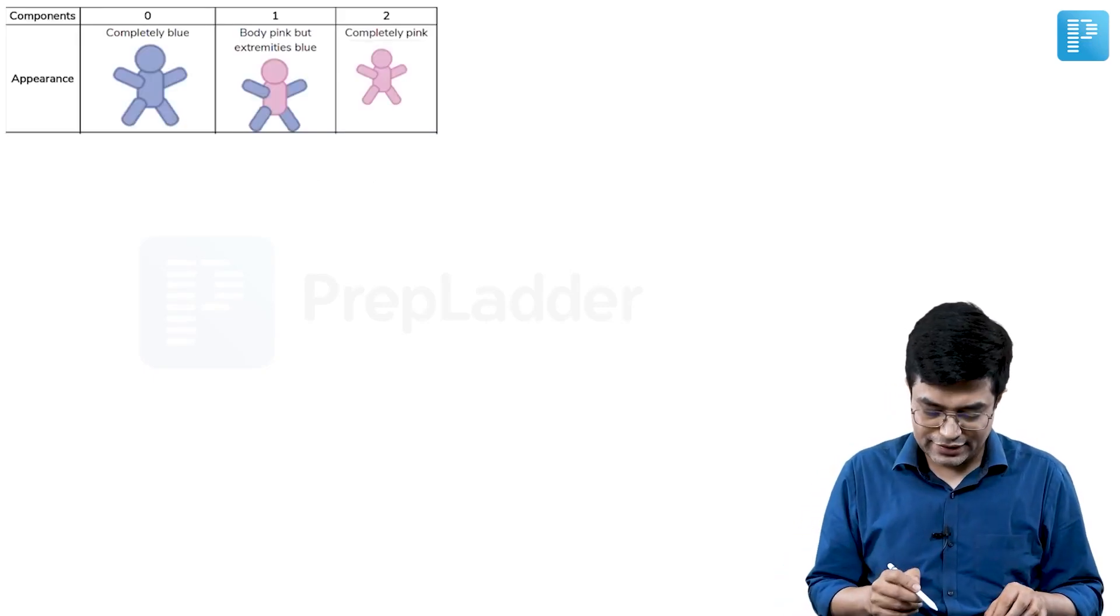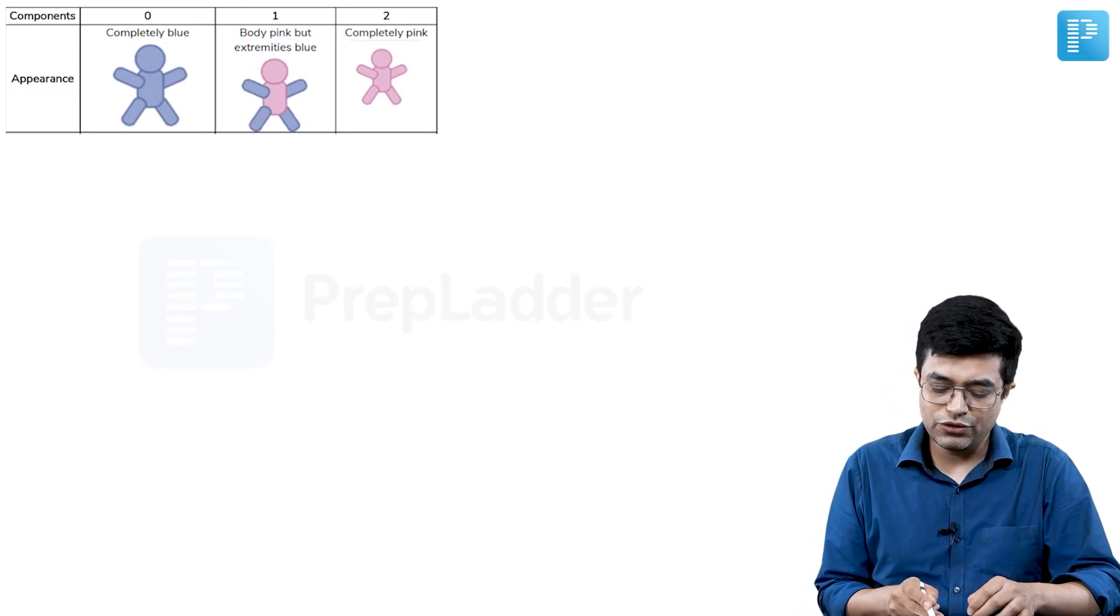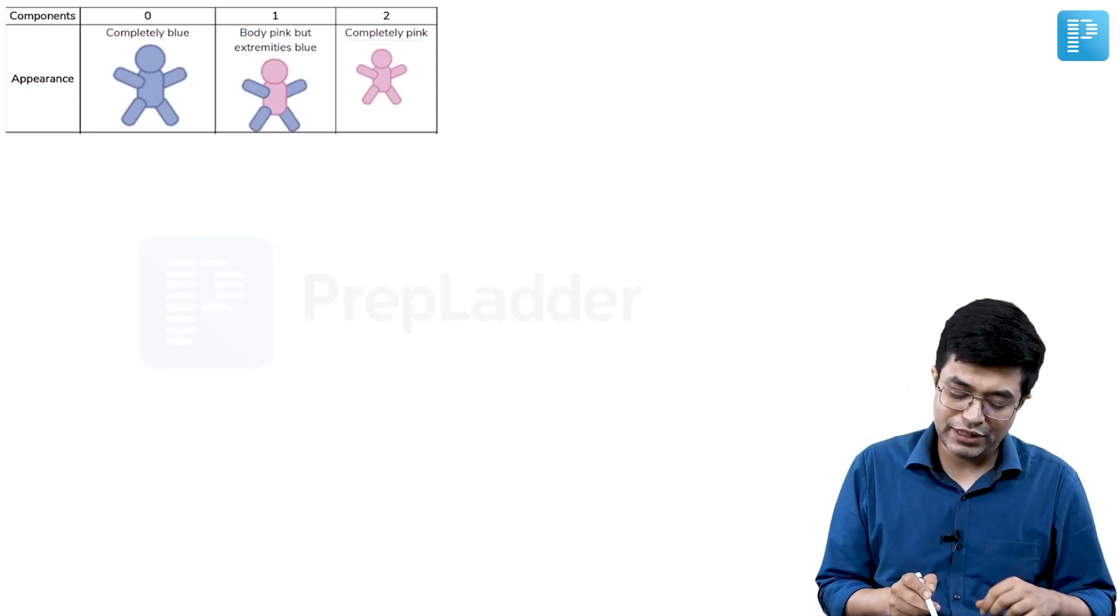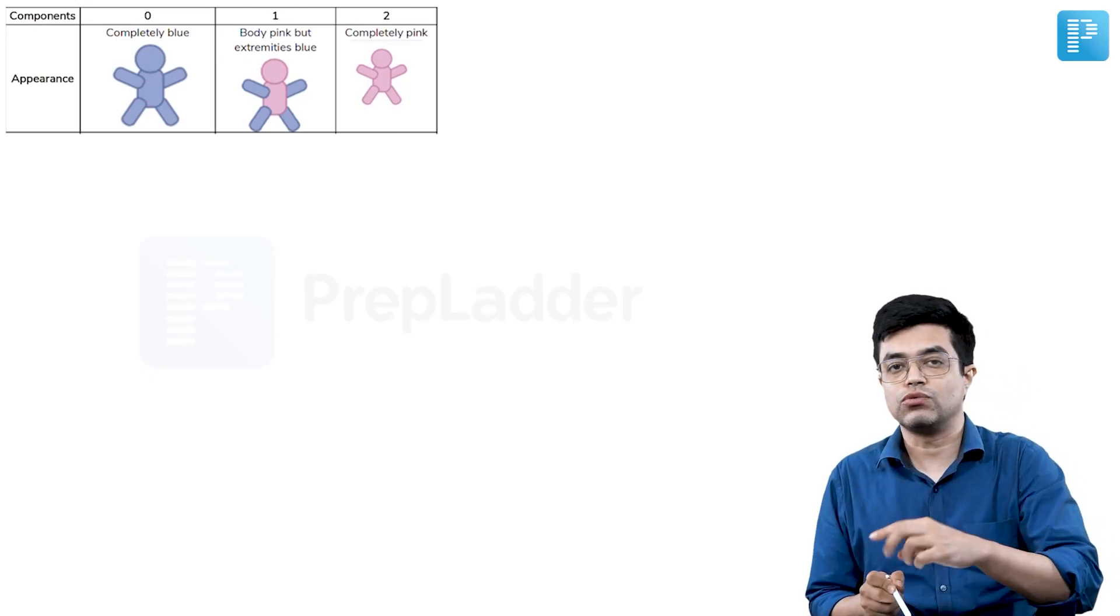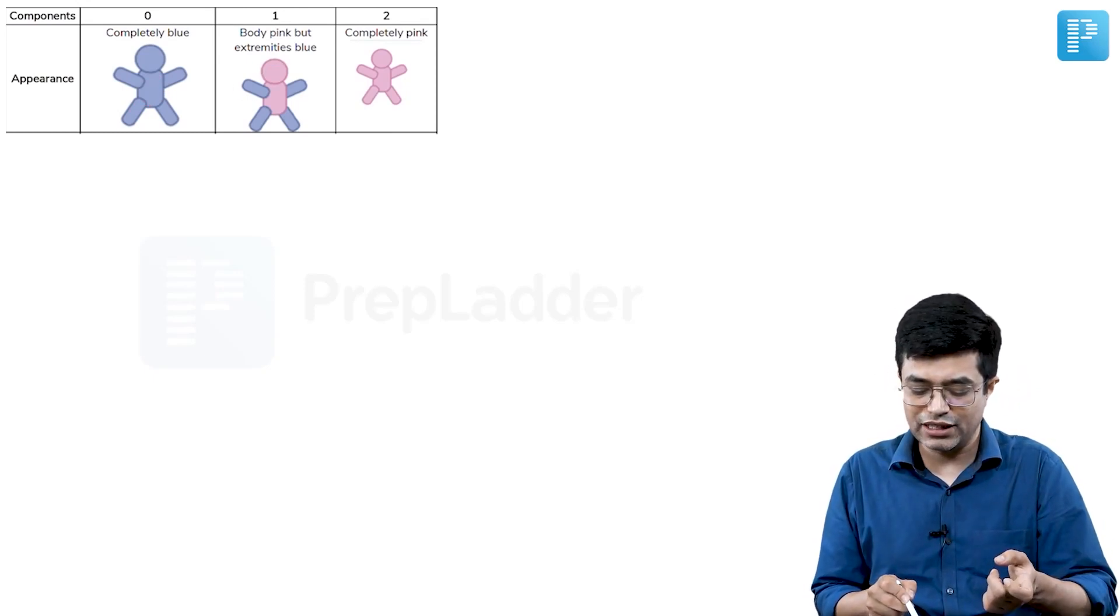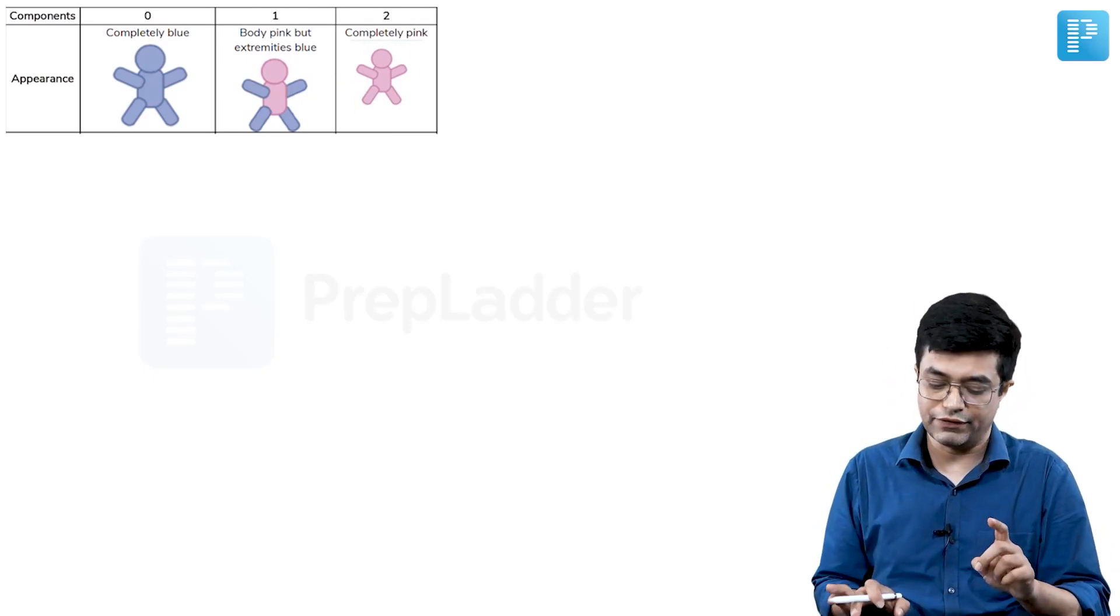So the first component is appearance. A stands for appearance. Score of 0 is given if the child is completely cyanotic. If the child is completely blue, we give a score of 0. If the child is having acrocyanosis, what is acrocyanosis? Body is pink but the extremities are blue, a score of 1 is given. And if the child is completely pink, a score of 2 is given.